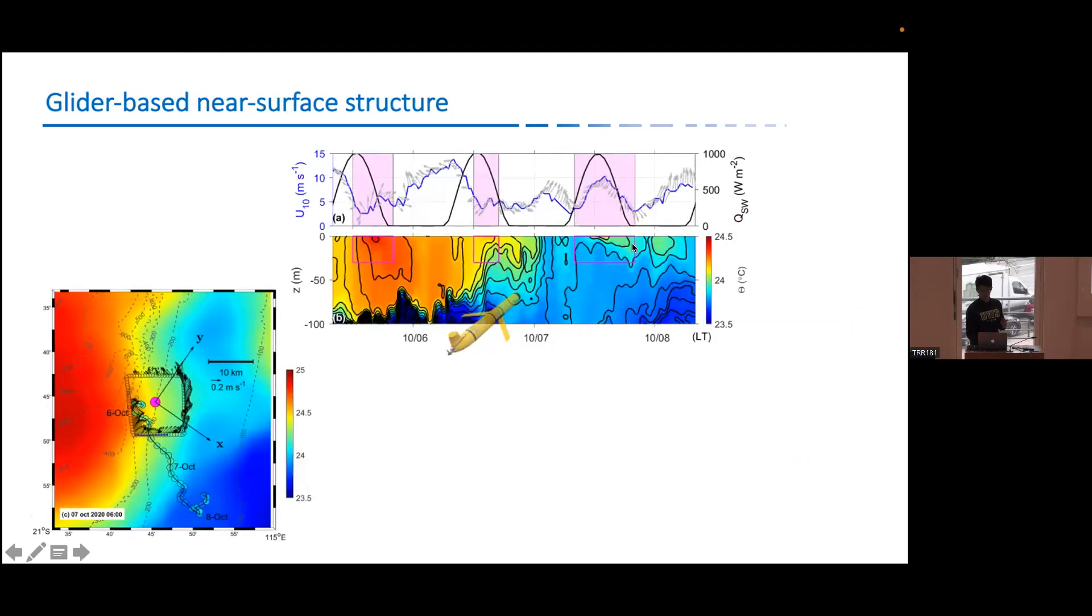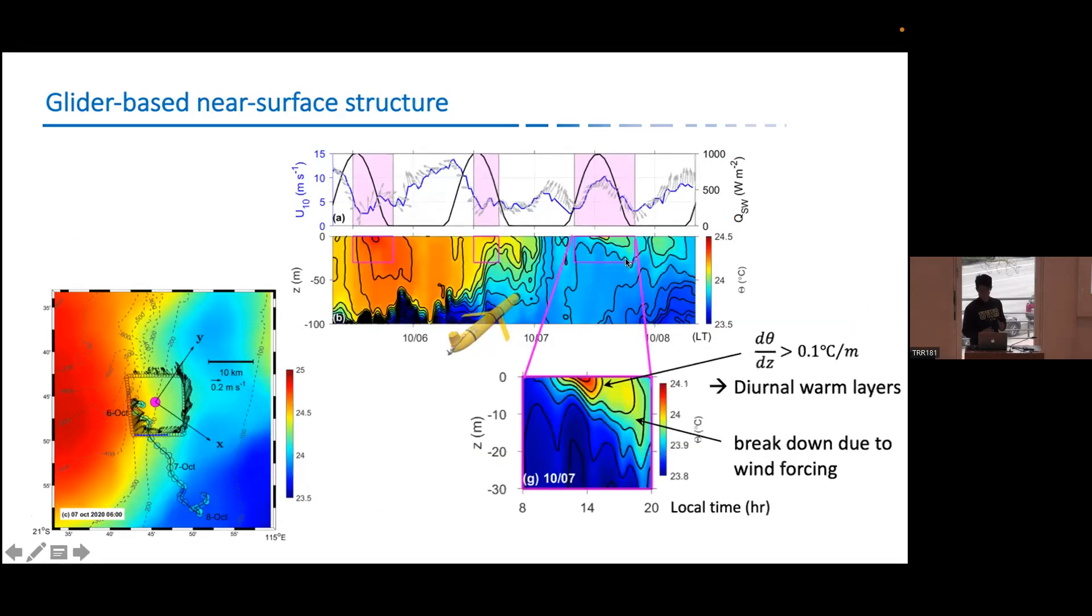If we zoom into this region, what we see is there is a diurnal warm layer sitting in the very surface, right? And it has a gradient which is very large. By definition, this is so-called diurnal warm layer. However, it breaks down when the wind gets stronger, then you basically break down the diurnal warm layers. And that's led to downward transport of the heat into deeper ocean.